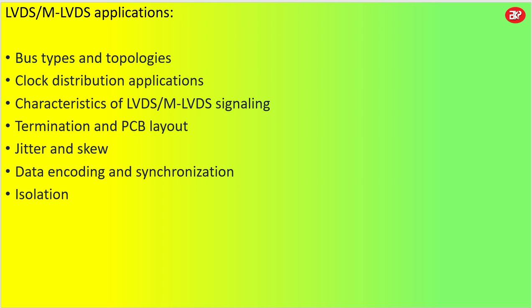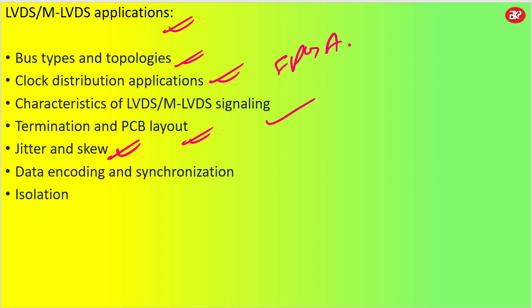The applications of LVDS include bus type and topology applications, and clock distribution applications. I have been utilizing a lot of LVDS in clock distribution applications in my FPGA circuits. There are also characteristics of LVDS signaling, and then termination and PCB layout — a lot of termination is required so that you don't have noise issues or signal coupling issues. We also want to avoid jitter and skew in pulses. Data encoding and synchronization are also areas where LVDS is utilized, as well as isolation of signaling.